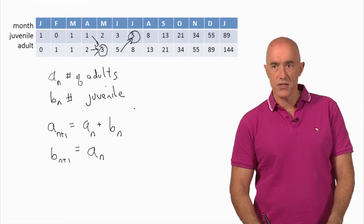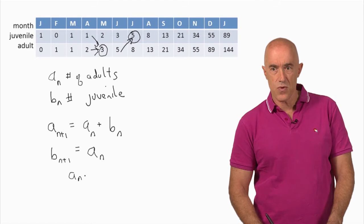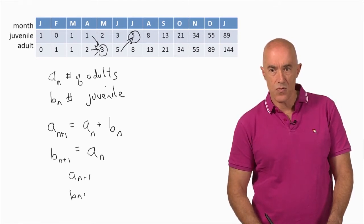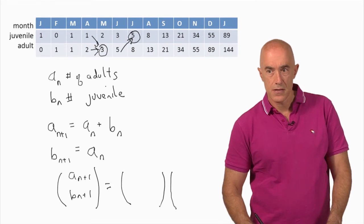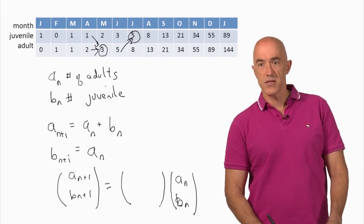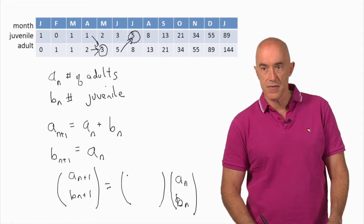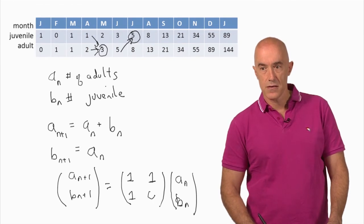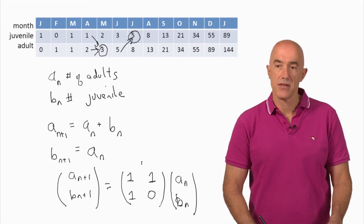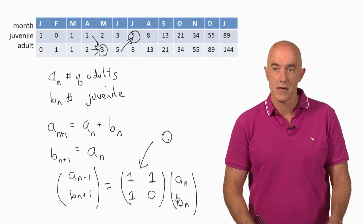This is a matrix equation. We can write A_(n+1), B_(n+1) as a column vector equal to a matrix times the column vector A_n, B_n. Since A_(n+1) = A_n + B_n, we have a 1, 1 in the first row. And since B_(n+1) = A_n, we have a 1, 0 in the second row.